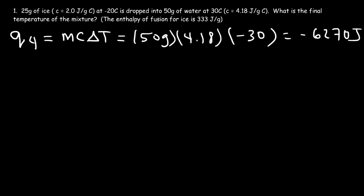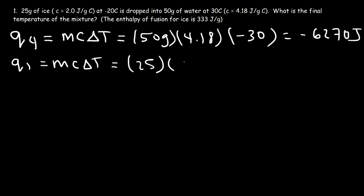Now let's see how much energy is absorbed by the ice. First, the temperature of the ice has to go up from negative 20 to zero degrees Celsius, so we use MC delta T again. The mass of the ice is 25, the specific heat capacity is about 2 joules per gram per Celsius, and the change in temperature going from negative 20 to zero is positive 20. So 25 times 2 times 20 is 1,000 joules.